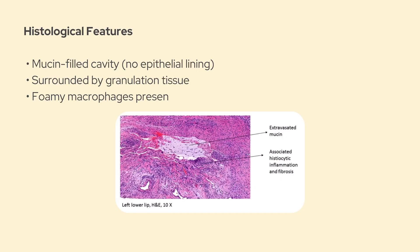From a histological point of view, which is super important to understand, it's actually quite interesting. What you'll typically see is a cavity filled with mucin surrounded by granulation tissue. There's no epithelial lining, again reinforcing that it's not a true cyst. Within this granulation tissue, you'll often find lots of foamy histiocytes or macrophages that are busy cleaning up the spilled mucus. The overlying epithelium tends to be thin and stretched, making it pretty easy to rupture with even minimal trauma.